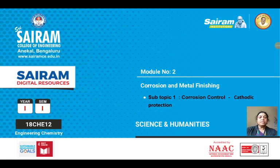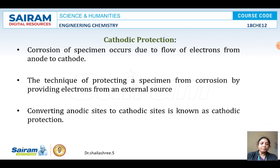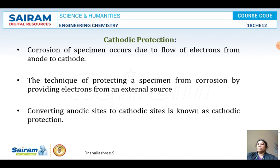Hello friends, we are in module number 2 and we are starting with the next topic: corrosion control under the chapter on corrosion. In this session, we will be discussing cathodic protection. Let us see what cathodic protection is. Cathodic protection, as the name says, is protecting the cathode. Before that, think about corrosion - we discussed almost all types of corrosion and also a few types of corrosion control.